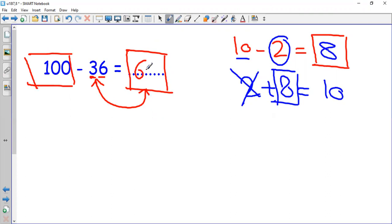6, I need 4 to make 10. So 100 minus 36 equals 64. Let's check our answer. 4 plus 6 equals 10. 60 plus 30 equals 90, and together make 100.